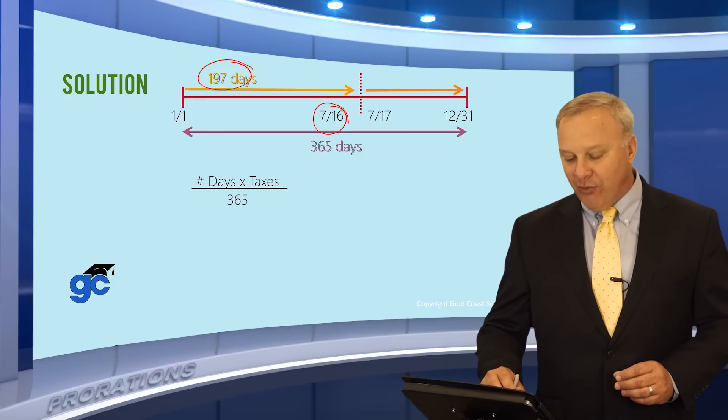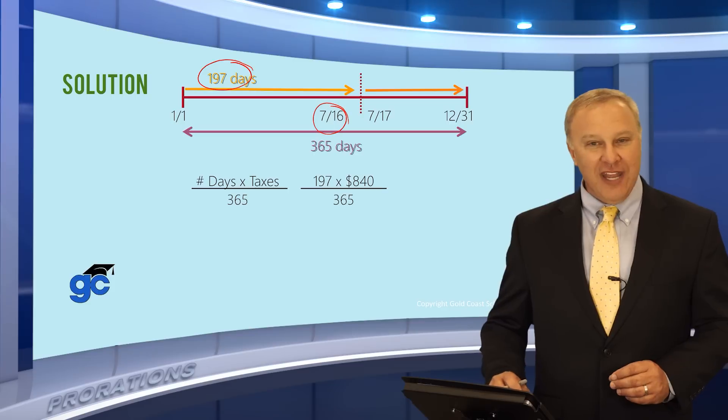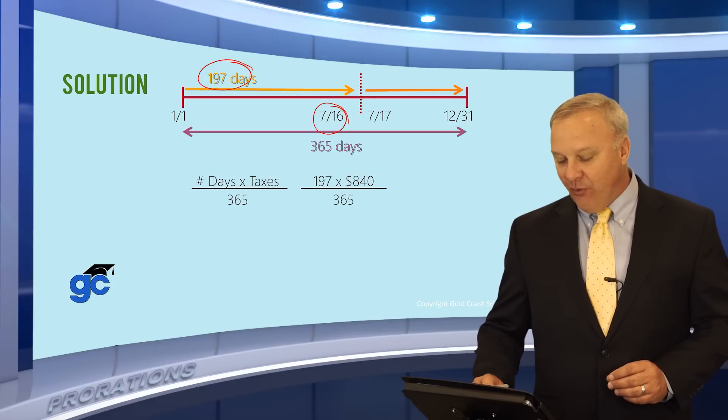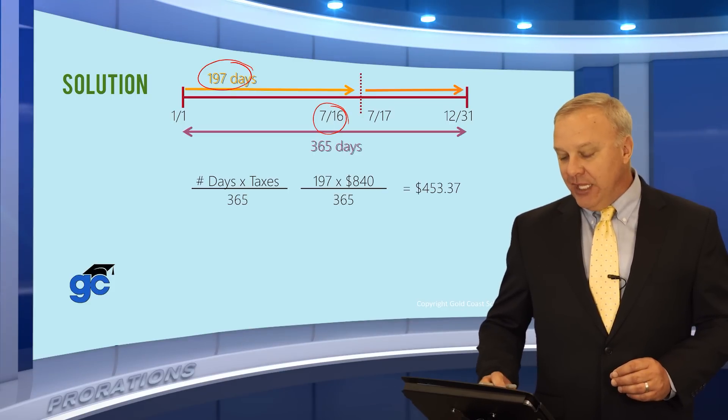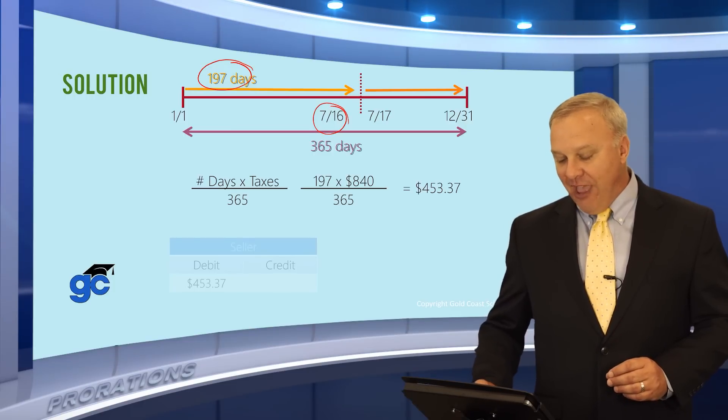Again, the formula is the number of days times the amount of the taxes divided by 365. In this case, 197 times $840 divided by 365 gives us $453.37.